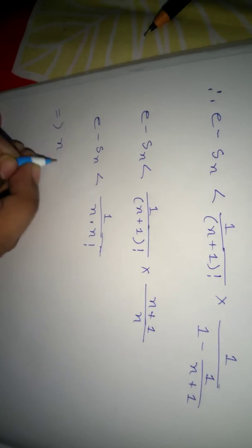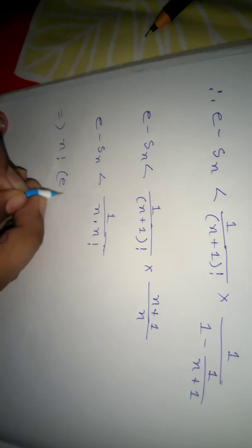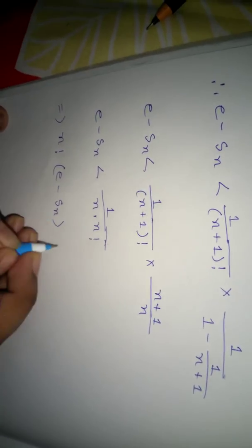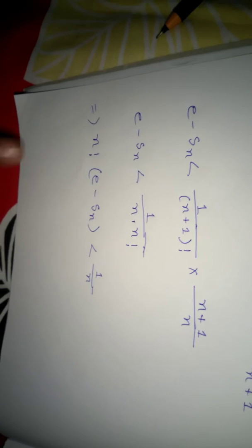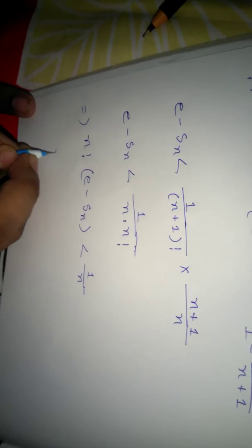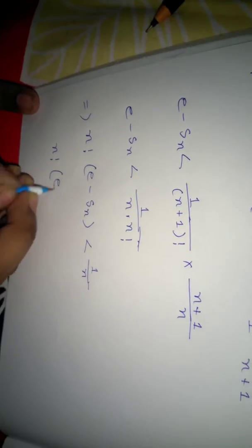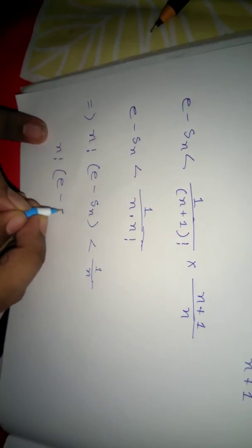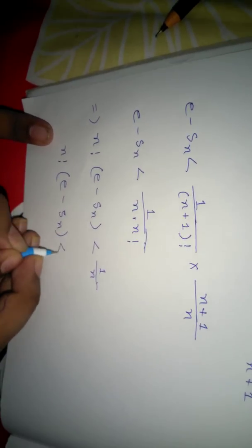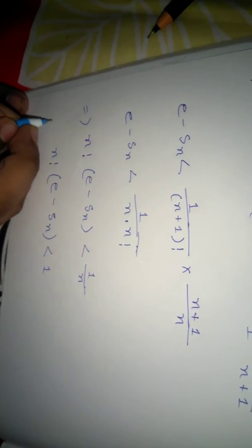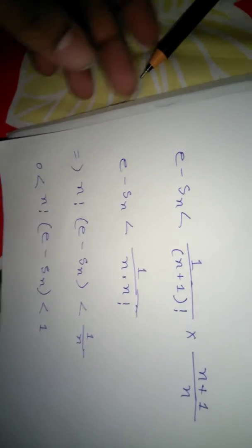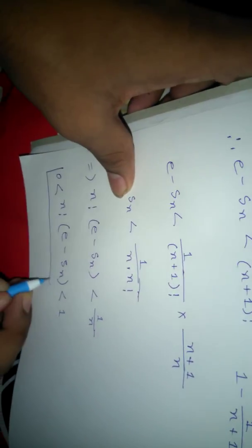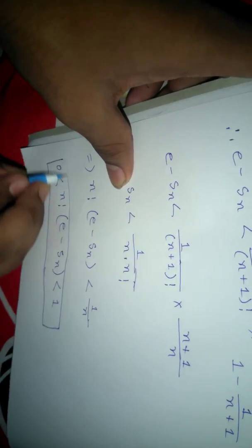Then e minus Sn is less than 1/(n · n!), and so n! · (e minus Sn) is less than 1/n, which is clearly less than 1 for any value of n. And it is also greater than 0. Then obviously it is a fraction.